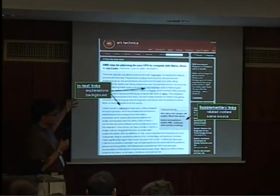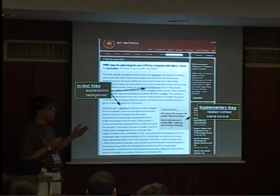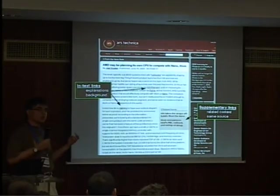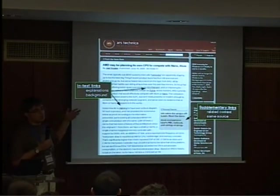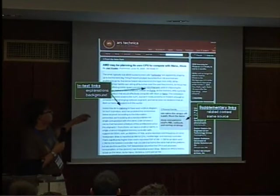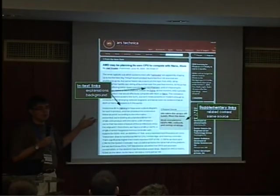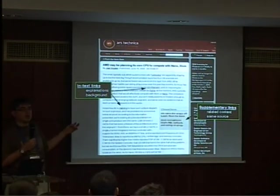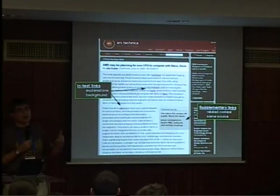On the other hand, we have in-text links, on which I will be focusing in this talk. These links have anchors inside the main body of the text, and they are usually used to provide more in-depth coverage of certain concepts or phrases that appear in the text — like explanations for words that readers may not be familiar with, or links to background knowledge needed to understand the current article, like previous articles in a series or something like that.